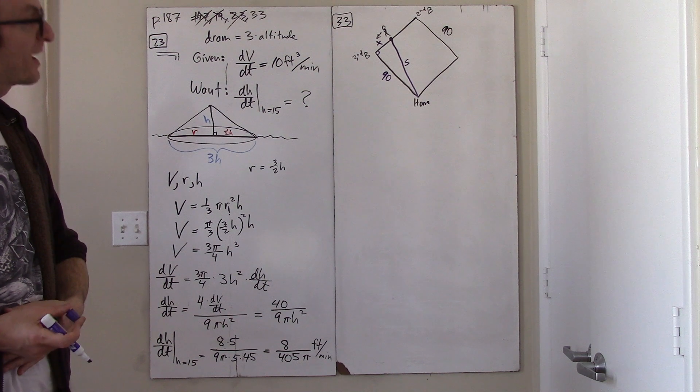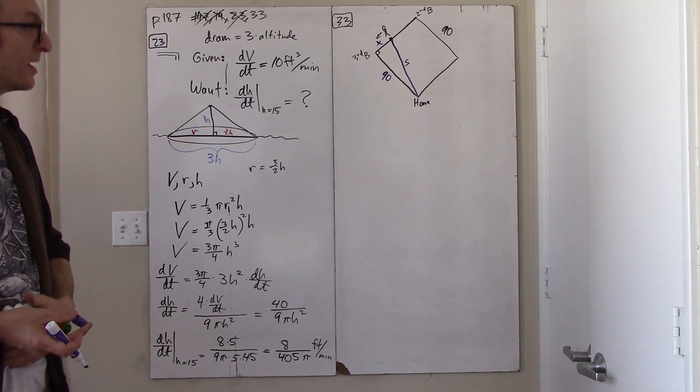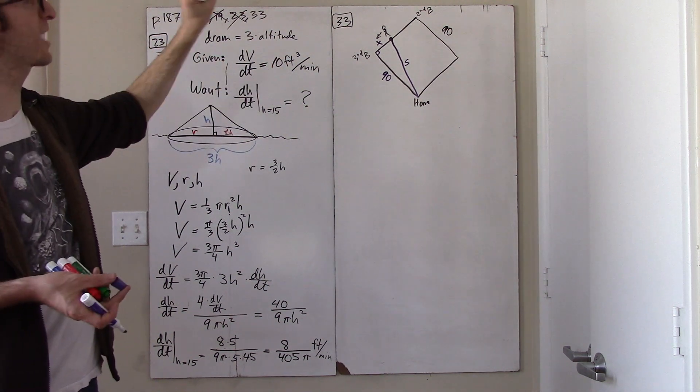Okay, so read and understand the problem. Draw a picture. Pick variables for the quantities which are changing. Add those variables to your picture.